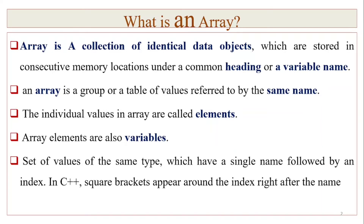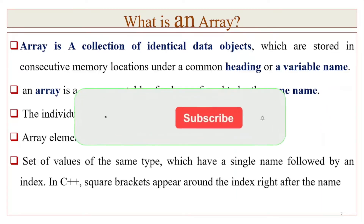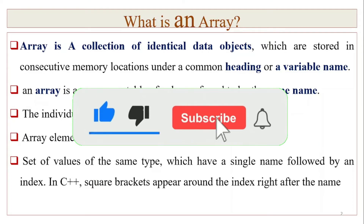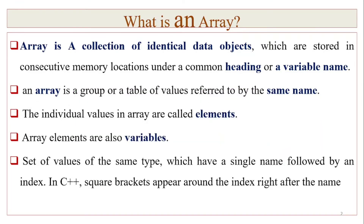An array is a collection of identical data objects. You can use a C++ array variable. The class example is the student. An array is a collection of identical data objects stored in consecutive memory locations under a common heading or name. In other words, an array is a group or a table of values referred to by the same name.